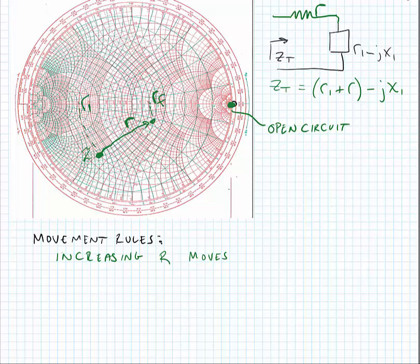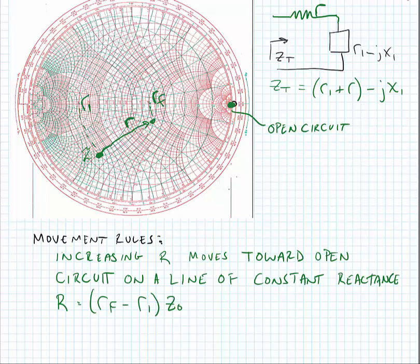So our movement rules can now be defined. If we increase resistance, it moves towards an open circuit on a line of constant reactance, and it is frequency independent as the resistor has no frequency dependence for its impedance. To read the resistance value off the chart, we read the initial resistance value R1, subtract that from the final resistance value Rf, and unnormalize by multiplying by Z0, the characteristic impedance. Now we'll see what happens when we add a shunt component.